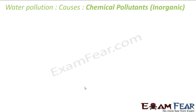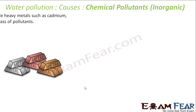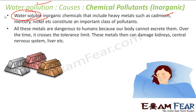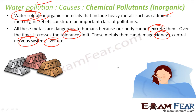The next cause is chemical pollutants, which include organic and inorganic types. Inorganic chemical pollutants include heavy metals such as cadmium, mercury, and nickel. These are dangerous because when you consume heavy metals, you cannot excrete them. Over time, you keep consuming them and their concentration crosses the tolerance limit, which can damage the kidney or central nervous system and can also cause death.